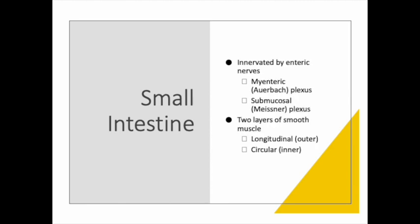Regional lymph nodes and lymphatics drain to the thoracic duct and empty into the subclavian vein. Enteric nerves from the autonomic nervous system innervate the small intestines. Secretion, motility, pain, and intestinal reflexes are mediated by the parasympathetic nervous system — specifically the vagus nerve. Sympathetic activity inhibits motility and causes vasoconstriction. Intrinsic reflexive activity is mediated by the myenteric plexus and the submucosal plexus — also called the Meissner plexus — of the enteric nervous system.